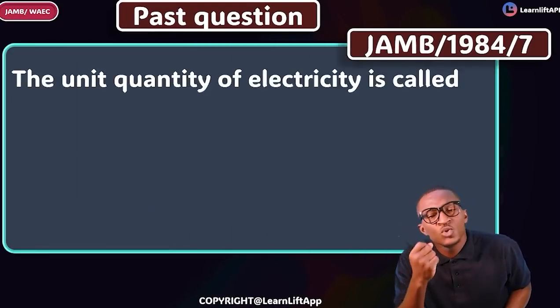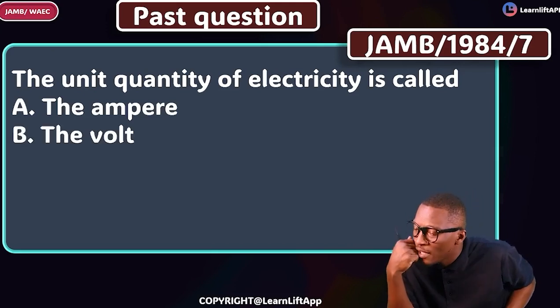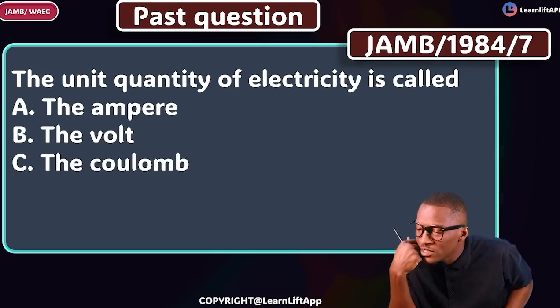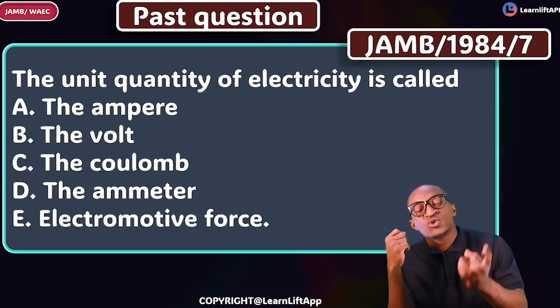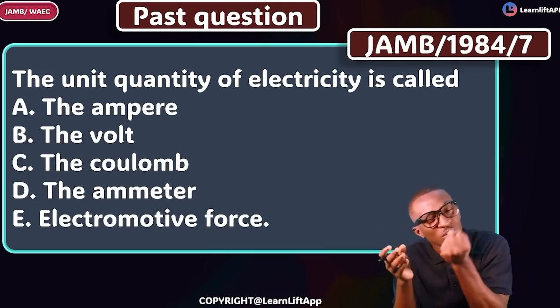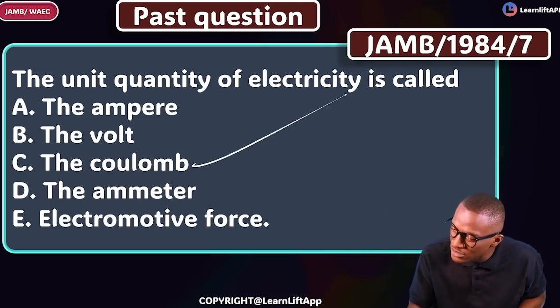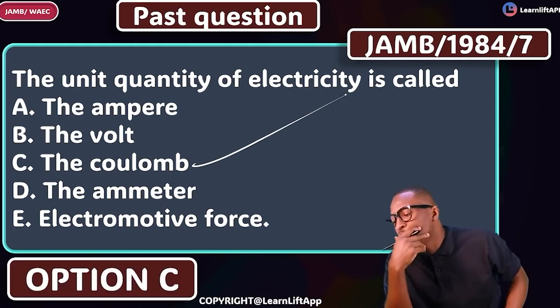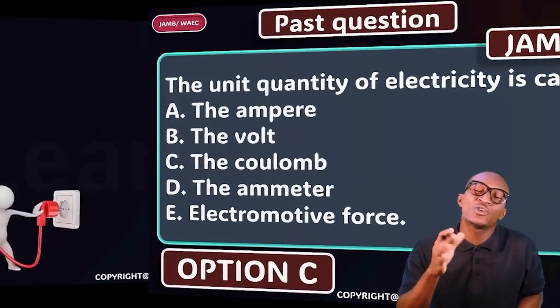JAM 1984 question 7: the unit quantity of electricity is called what? Option A: ampere, B: volt, C: coulomb, D: ampere, E: electromotive force. The unit quantity of electricity is coulombs, making option C the answer.